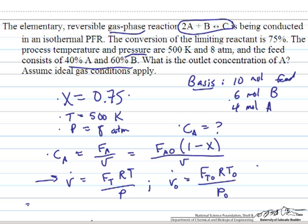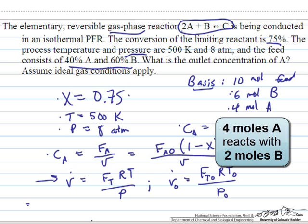The first thing we need to do is we are told that the conversion is 75% for our limiting reactant, so the question is what is the limiting reactant? Well we can actually see just by a quick thought experiment that it has to be A, that if we consume all 4 moles of A, we have this 2 to 1 stoichiometry, and so only 2 moles of B will be consumed, and we will therefore have 4 left over. So that means we will have B left over when we consumed all of the A, and therefore A is the limiting reactant.